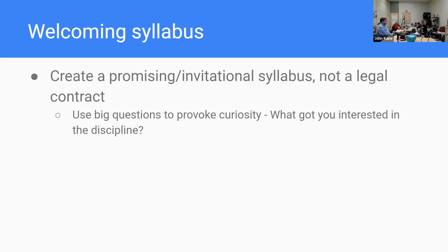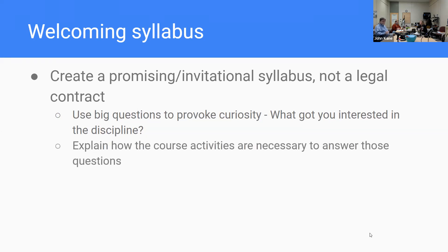One of the first things is, when you think about your course, think about the things that got you interested in the discipline. After you've been doing this for a while, in grad school you think about fairly narrow topics, but those are not generally what got you interested in the first place. Think about the big questions your class addresses that might engage students, and design your whole class around one or a few of those big questions to provoke curiosity at the start of the course and in the syllabus — explaining how each activity is necessary to answer those big questions.